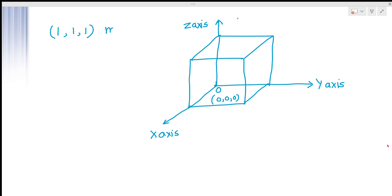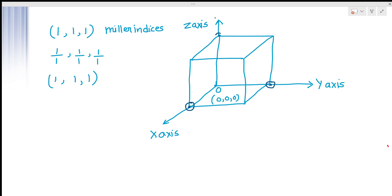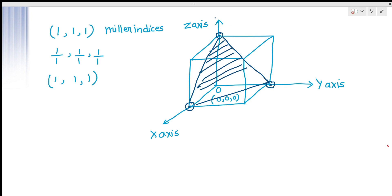These are our Miller indices: 1, 1, 1. We have to find the point of intersection, so we take the reverse. The reciprocal of 1,1,1 is 1/1, 1/1, 1/1, which means 1, 1, and 1. Now see the points of intersection in the cube: one point here on X, one on Y, and one on Z. Match these points and you can draw the plane like this.